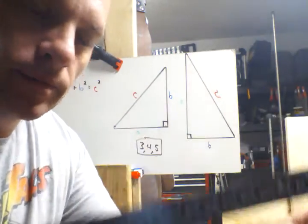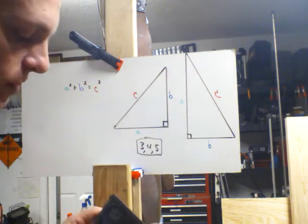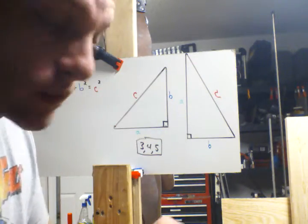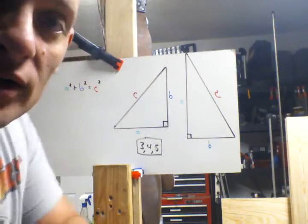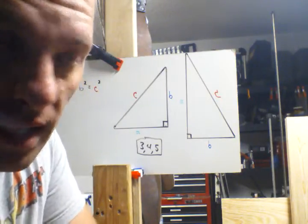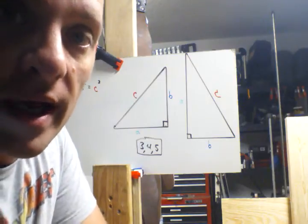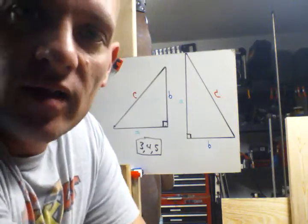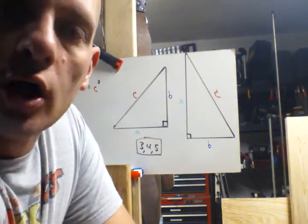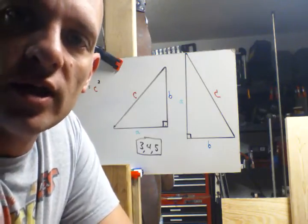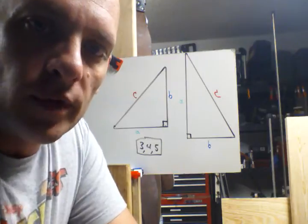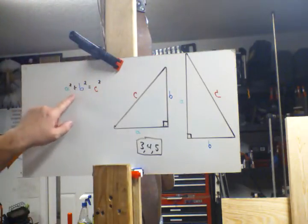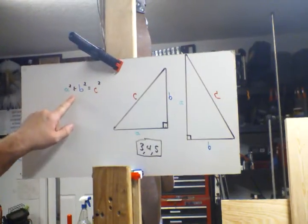A lot of you guys were mentioning, hey use the Pythagorean theorem, no one uses a square for this anymore. Well if you don't know how to use the Pythagorean theorem, that's what this video is on. Pythagoras is a mathematician that is long since dead and gone, but he came up with a cool theorem that works really well. This is the formula that he came up with.